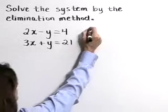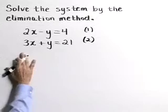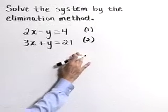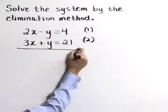I'm going to start by identifying these equations as numbers 1 and 2. Within the elimination method, we would like to be able to add these equations together and remove a variable, and that's going to happen very nicely with this system.